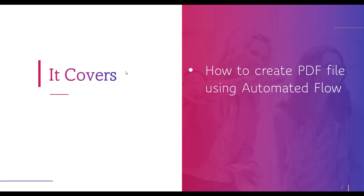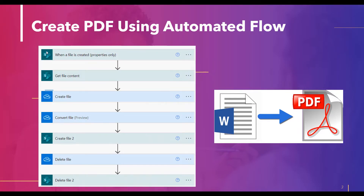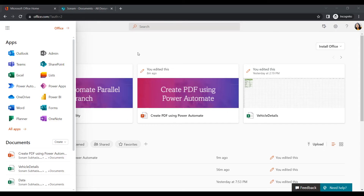Now we will see how to convert a file to a PDF format. Suppose we want to convert a text file or a Word file to PDF format. I'll first show you what the finished flow looks like, and then we will create it step by step. Microsoft Power Automate allows us to create a PDF freely using pre-built actions and connectors — even without any premium connectors.